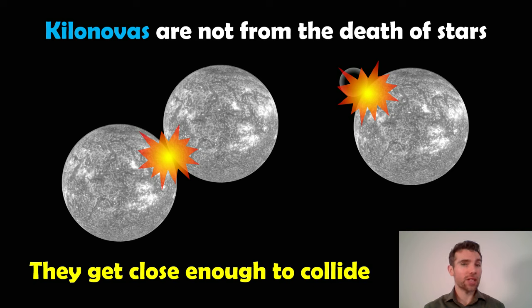These are binary systems which means you've got the two stars orbiting a common center of mass. They're on quite a tight orbit, so they're orbiting each other, they are spiraling inwards, and in time they get closer and closer to the point where they actually collide.